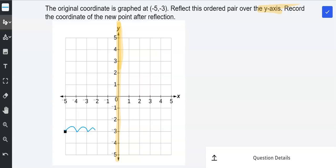1, 2, 3, 4, 5 units. That makes sense because this point was at negative 5 on the x-axis.